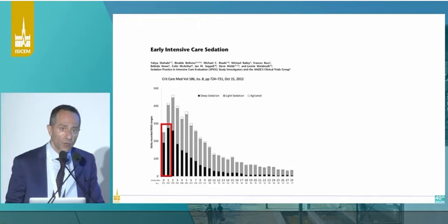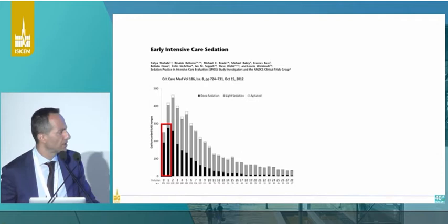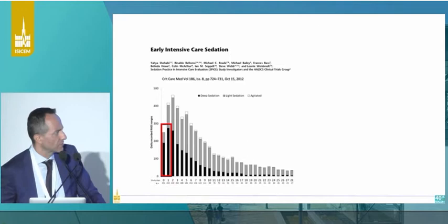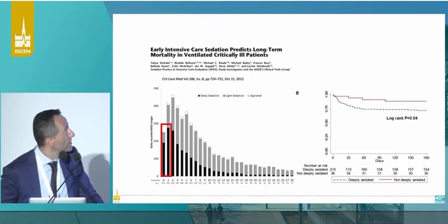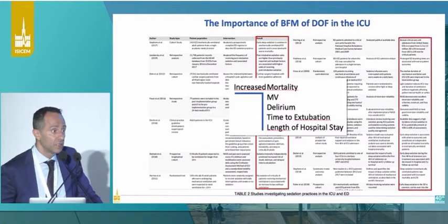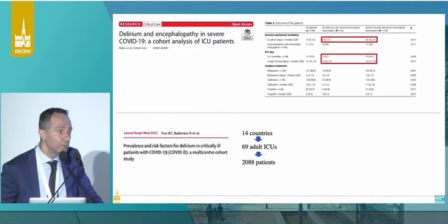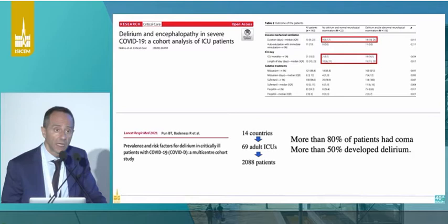In the ICU, monitoring deep sedation — we know that from the early phase when the patient arrives, over-sedation is quite common and has been linked to outcome. Over-sedation is linked to a negative outcome, in particular delirium. These are two recent papers showing that in COVID-19 patients, the problem of delirium is very, very present. So it may be worthwhile monitoring the depth of sedation in these patients, and we're performing a study looking at that at the moment.